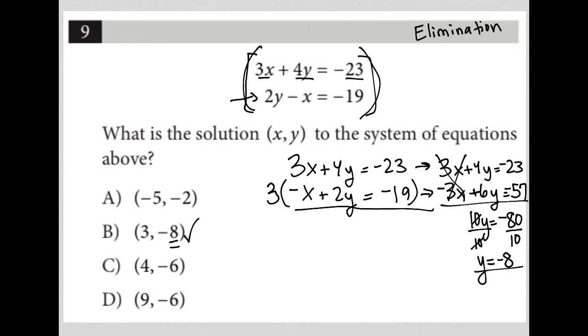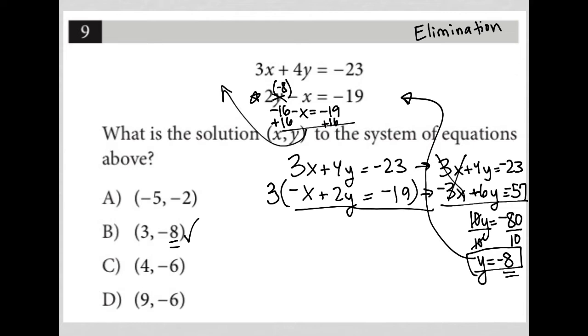To show you how to find the x value if needed, we take y = -8 and go back to the original equations. The easiest equation to plug into is the second: 2y - x = -19. Substituting -8 for y: 2(-8) - x = -19, so -16 - x = -19. Adding 16 to both sides gives -x = -3, and dividing by -1 gives x = 3. The ordered pair solution is (3, -8), so the answer is choice B.